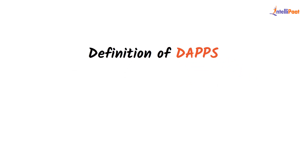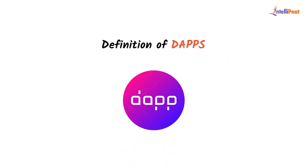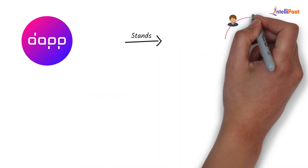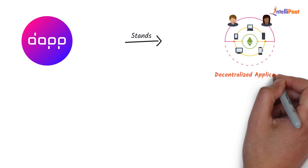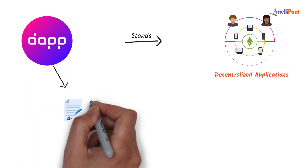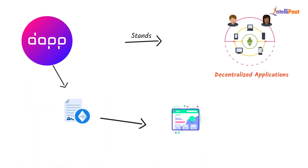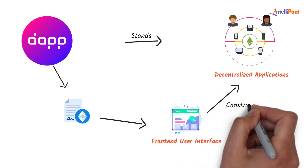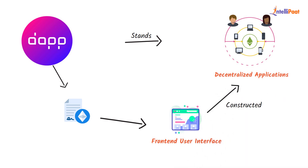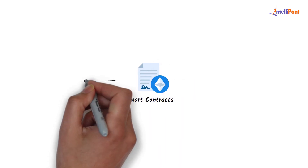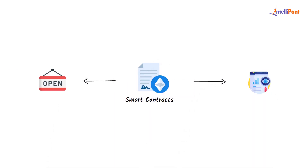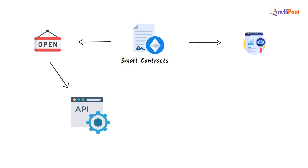Now we'll see the definition of dApps. dApps basically stands for decentralized applications. A dApp is an application that combines a smart contract with a front-end user interface that is constructed on a decentralized network. Smart contracts on Ethereum are open and transparent just like open APIs. Therefore, your dApp can include a smart contract even though it might be authored by someone else.